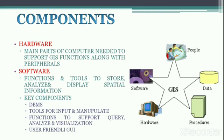There are basically two types of data used in GIS: spatial data and attribute data. Spatial data are data that are geographically referenced using coordinates. Coupled with this, attribute data contains additional information about the spatial data. The documentation of GIS data sets containing information on the content, quality, condition, origin and other characteristics of data is termed metadata.